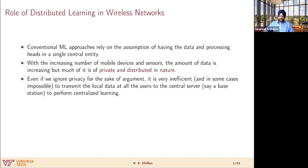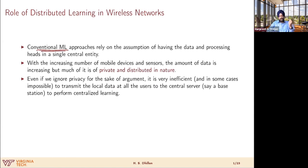Before we go into any details, let's first quickly discuss why we care about distributed learning in wireless networks. If you remember from our first seven lectures, the setting we had was that you have this large dataset at one location, and you're also processing that data at that location. That was the implicit assumption we made — what we call the conventional ML setting, or centralized machine learning setting. Now, if you think of the evolution in wireless networks, we have so many edge devices: smartphones, tablets, laptops, and many different types of sensors deployed as part of an IoT network. All these devices are collectively called edge devices.